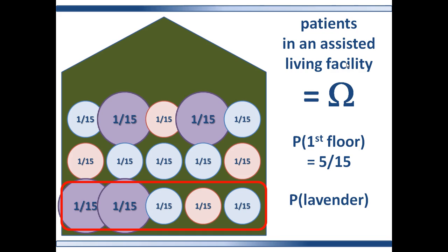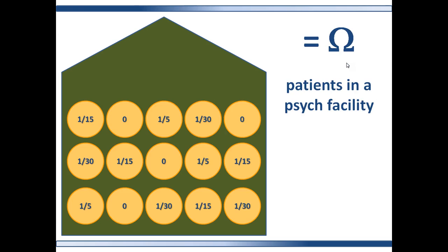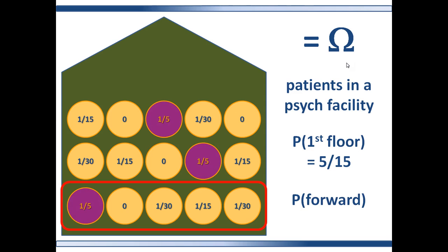The probability of getting a lavender patient is 4/15ths, since there are four lavender patients. Now in the psych ward, the rows again represent where patients sleep. The probability of being a first floor dwelling patient is the sum of the individual probabilities: 1/5 plus 0 plus 1/30 plus 1/15 plus 1/15 plus 1/30, which equals 5/15ths. The probability of being a forward patient is 1/5 plus 1/15 plus 1/15, which equals 3/5ths or 9/15ths.